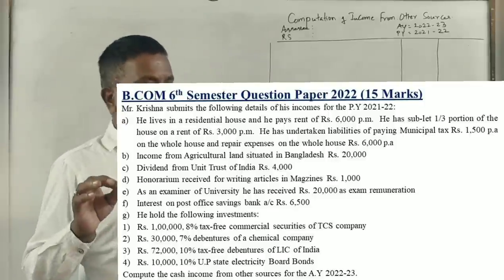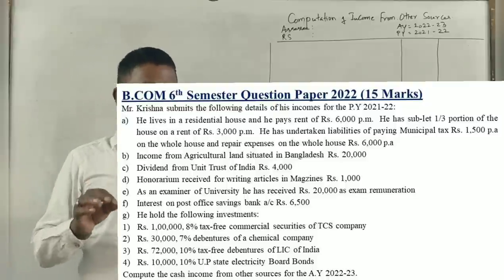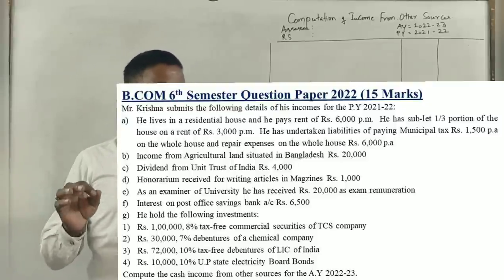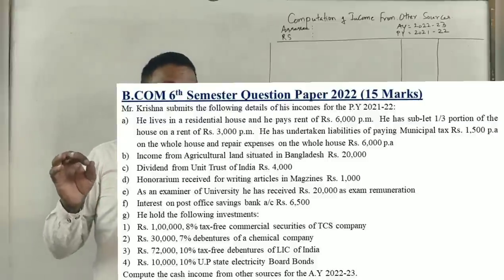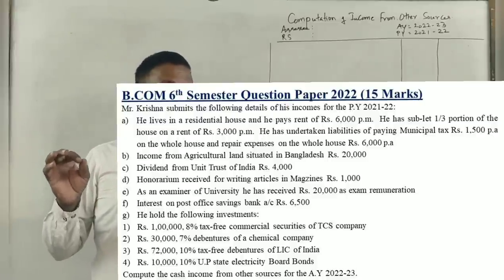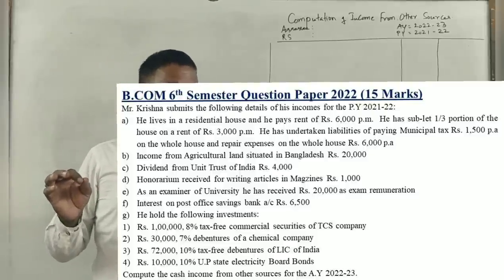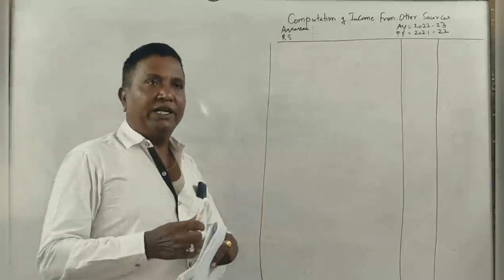He lives in a residential house and pays rent of 6,000 rupees per month. He sublets one-third portion of the house on a rent of 3,000 per month. He has taken the liability of paying municipal taxes of 1,500 rupees on the whole house.